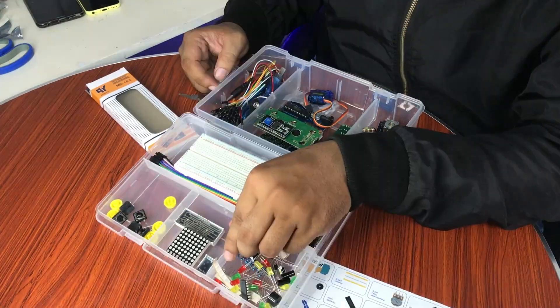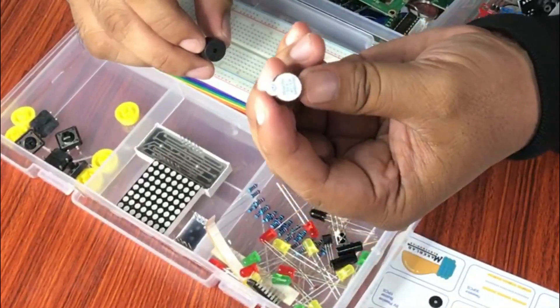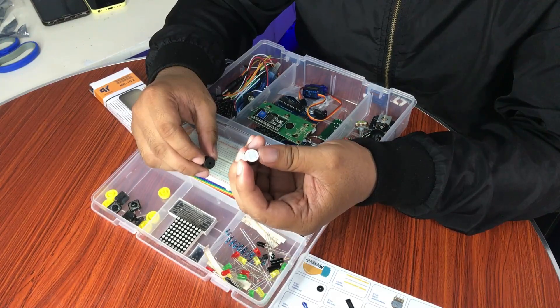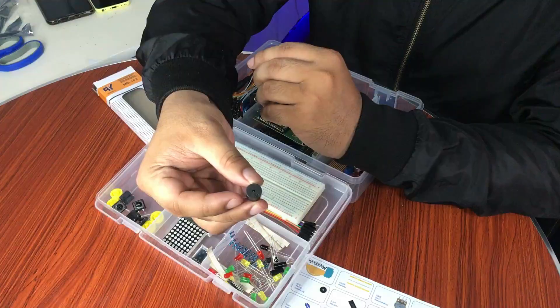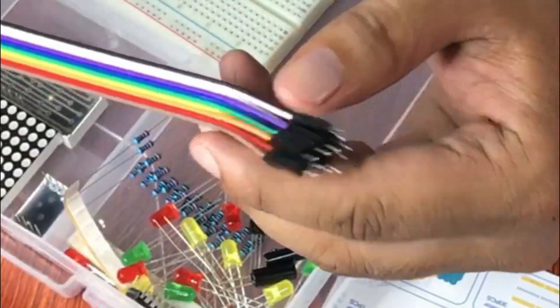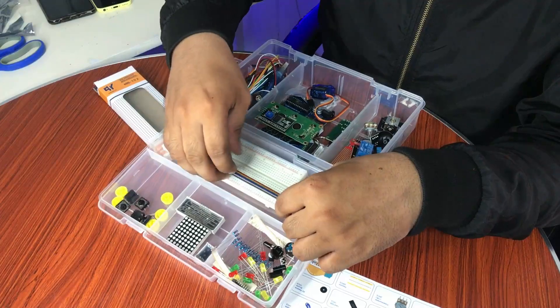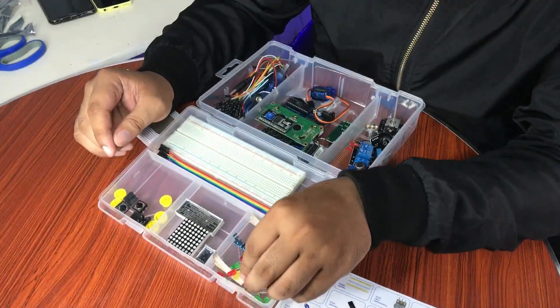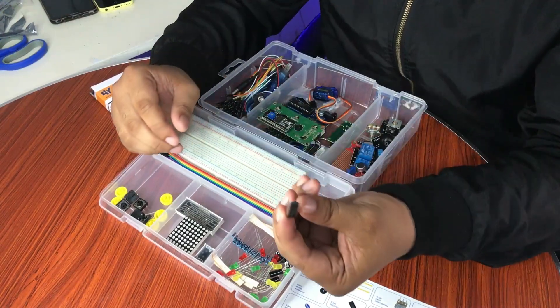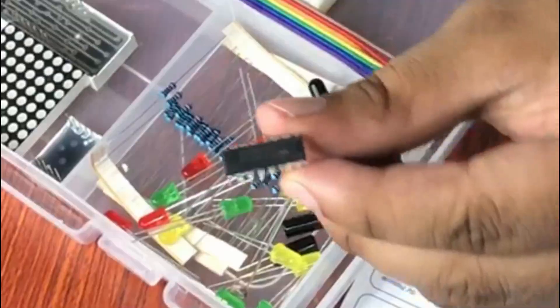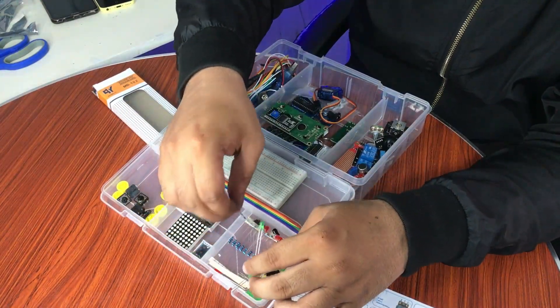5 volt active buzzer, this one. The passive buzzer, this one. This is the male and the female, the dupont wires. 74HC595 IC, so this is an integrated circuit. These are the resistors.